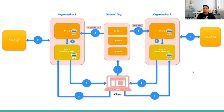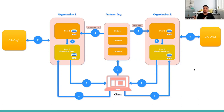The next step is creating channel artifacts — the genesis block and the channel transaction file, which is responsible for creating the channel. Once we have those channel artifacts, we create the channel, giving organizations a medium to communicate. They then deploy a smart contract — also called chaincode — on the channel so the organizations can communicate with each other.